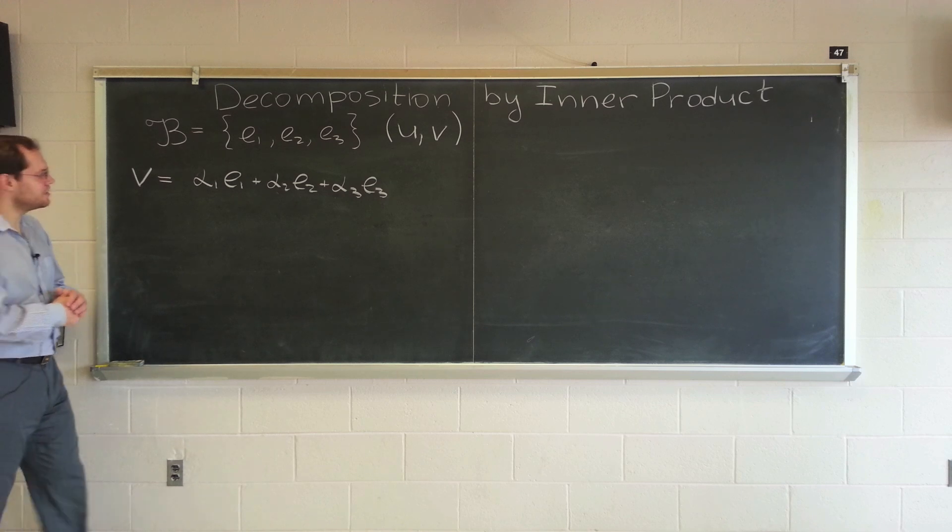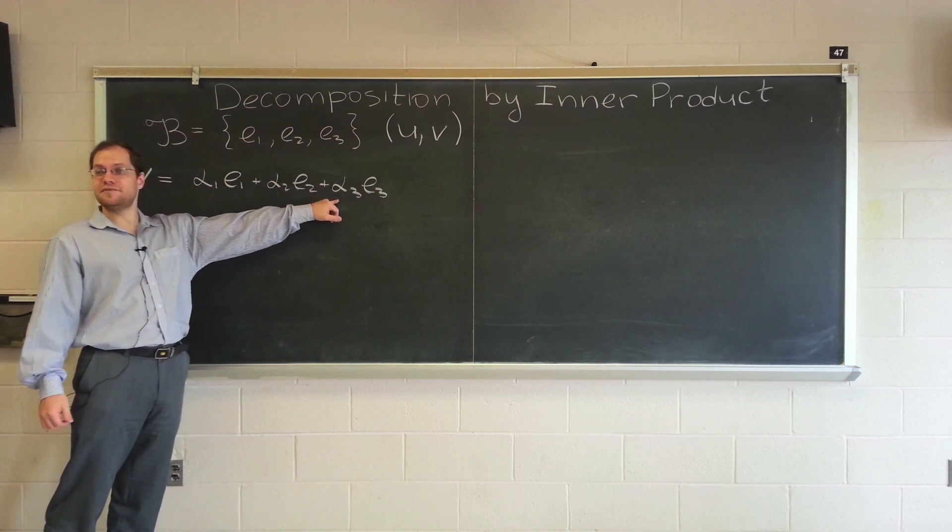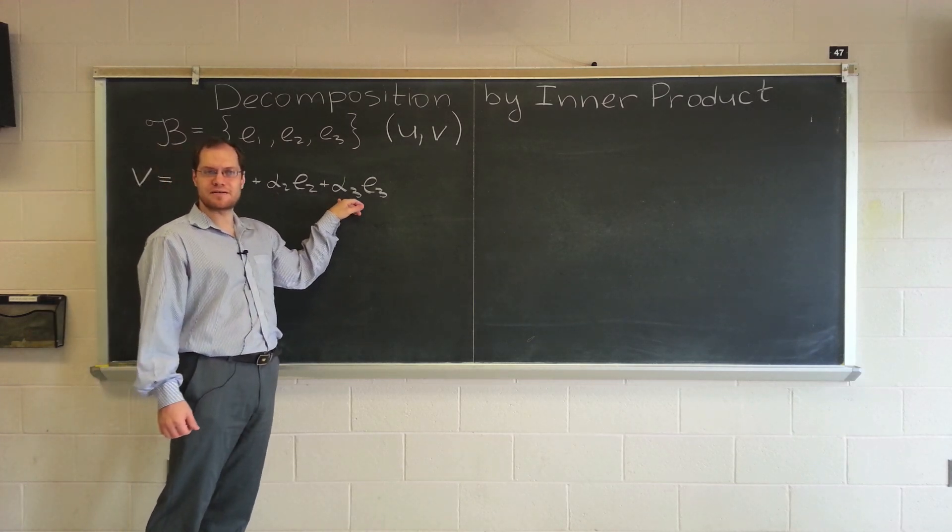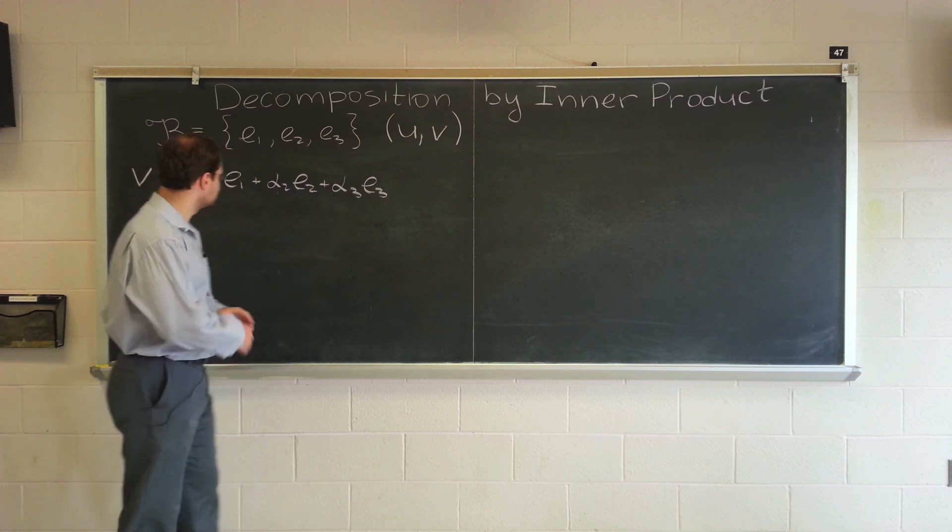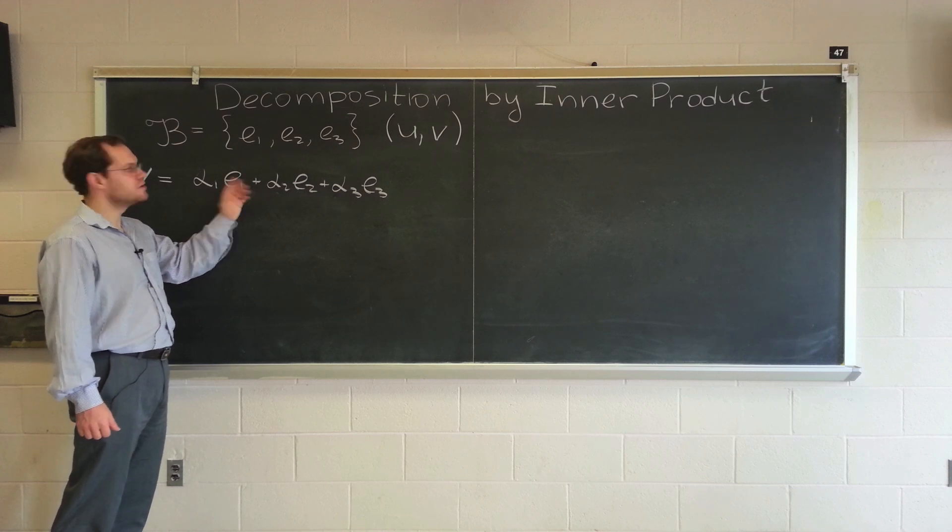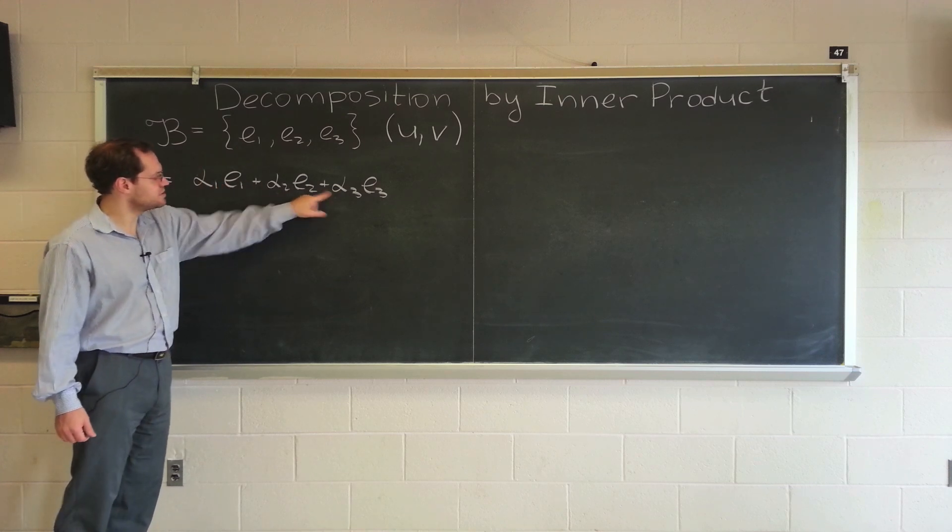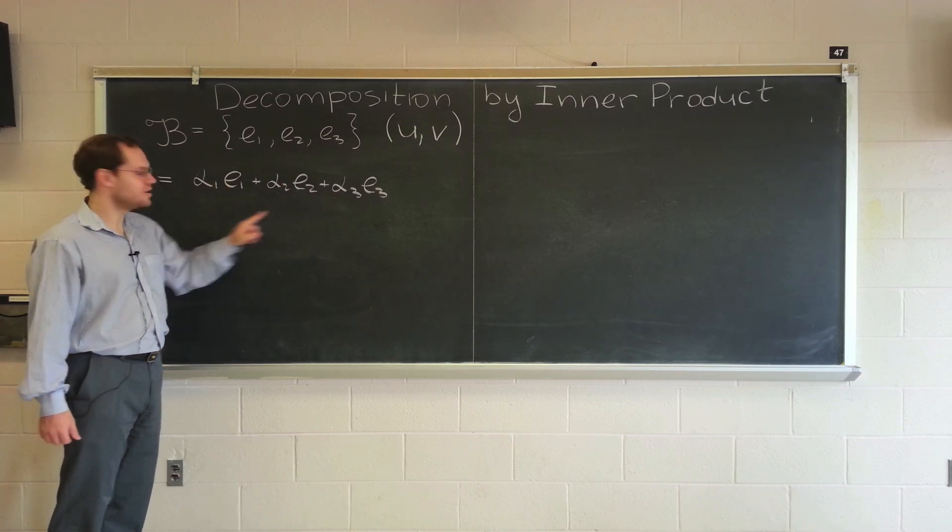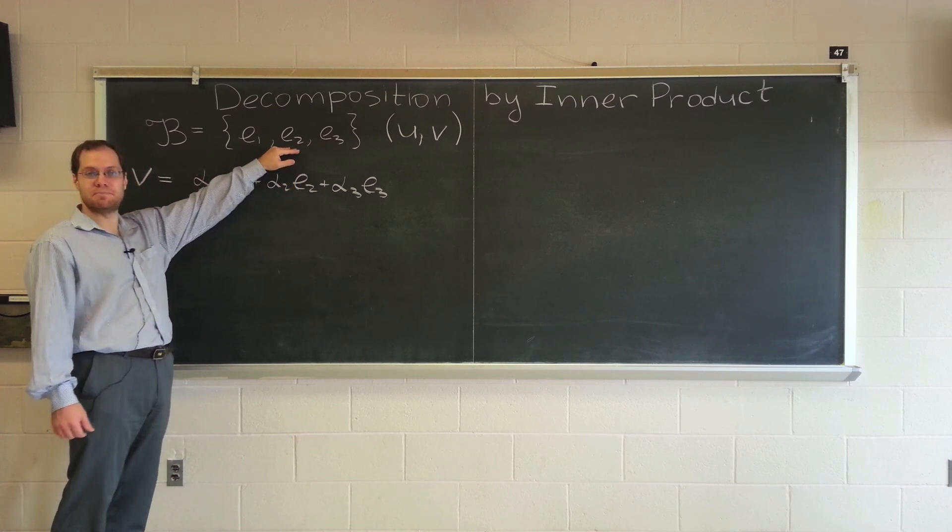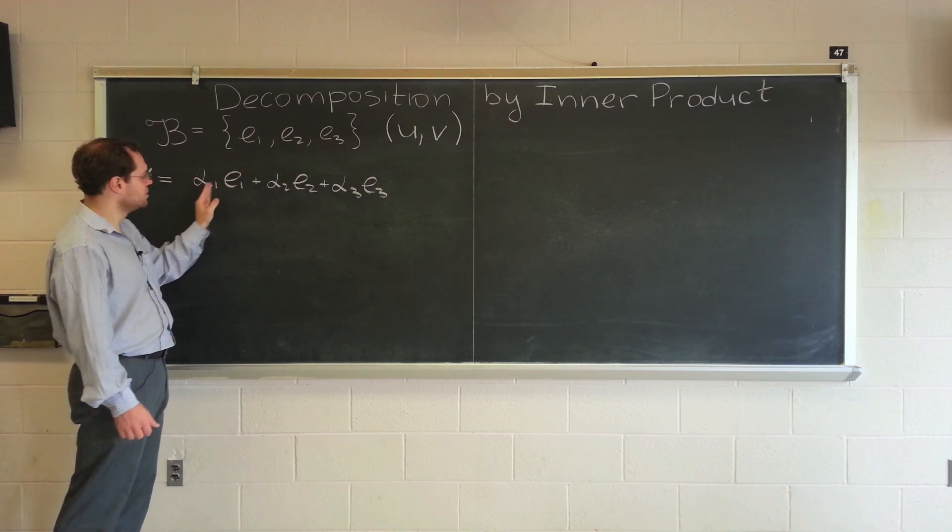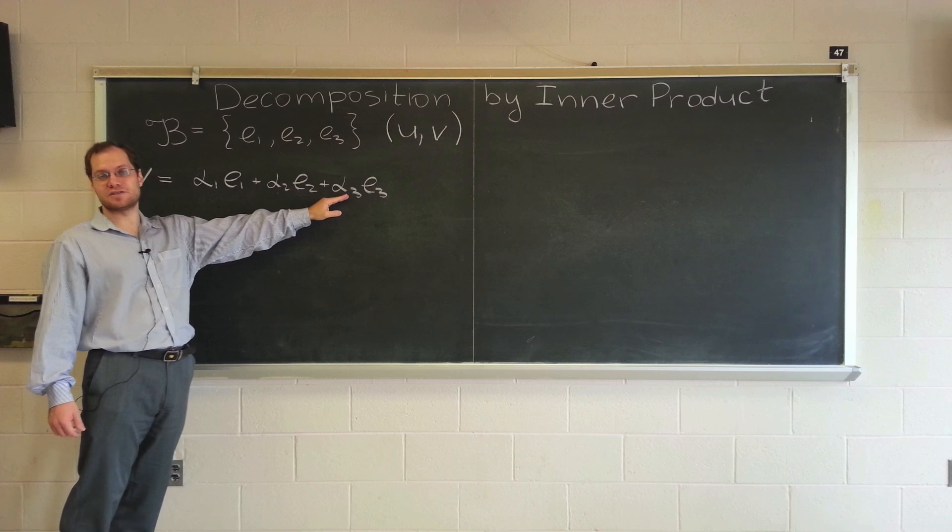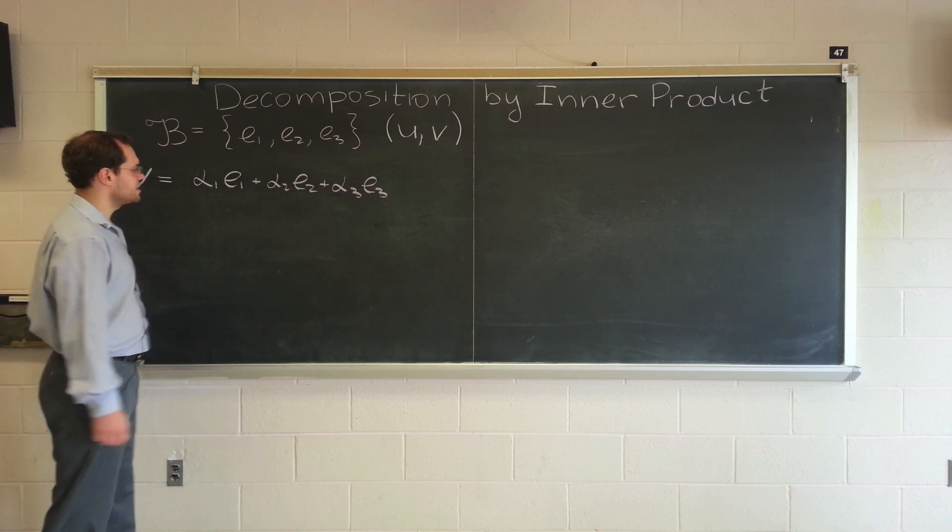Here is how you could determine each one of these coefficients individually only by evaluating inner products and performing other basic arithmetic operations. The idea is to dot both sides of this identity with e1. Decomposition is the procedure for obtaining the coefficients of representing a vector by a linear combination with respect to a basis. So our goal is to determine these coefficients, and it is done by evaluating inner products as follows. We will dot both sides with e1.